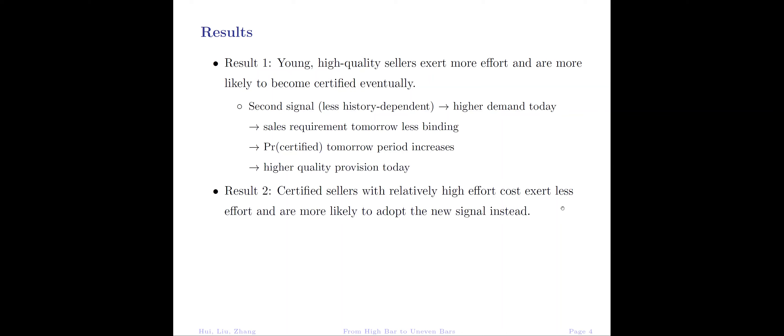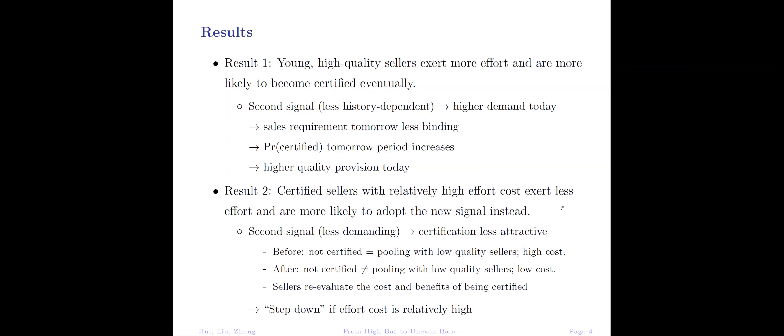Our second finding is that certified sellers with high effort costs exert less effort and are more likely to opt out of the stringent certification and adopt the new signal instead. Essentially, the introduction of the second signal makes the existing certification less attractive by offering a low-cost signaling opportunity. Therefore, a certified seller will step down from the certification if their cost of being certified is relatively high.